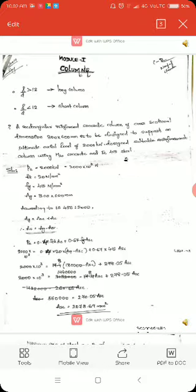Here we are defining the short column as the column having slenderness ratio less than 12.